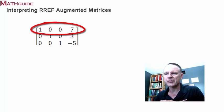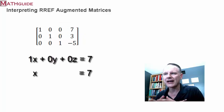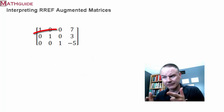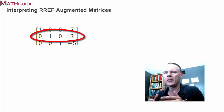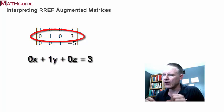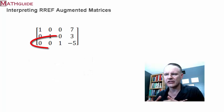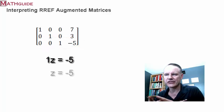The RREF is telling you right now what the solution is. That first row really just means one x plus zero y's plus zero z's equals seven. In other words, algebraically speaking, that means x equals seven. The next row likewise means zero x plus one y plus zero z equals three, or in other words, y equals three. Following that exact same logic, you can see in the last row that's one z equals negative five, or just plain old z equals negative five.